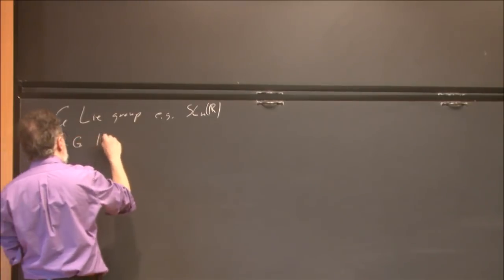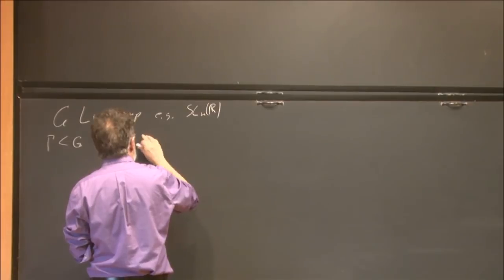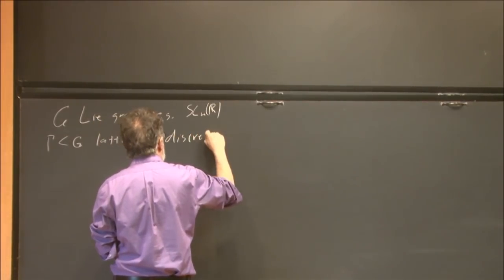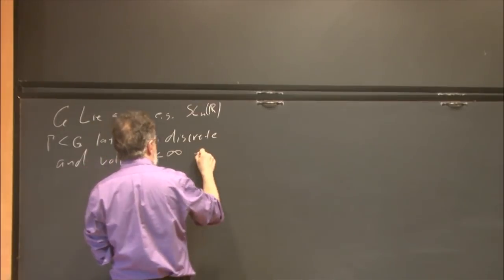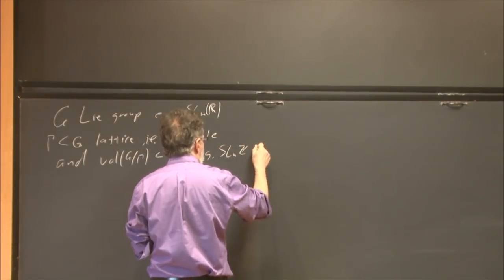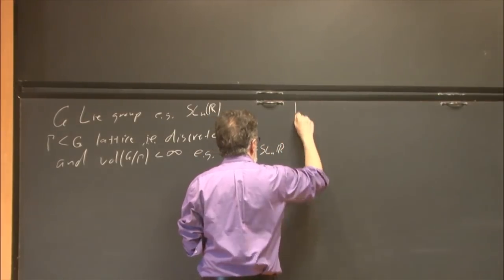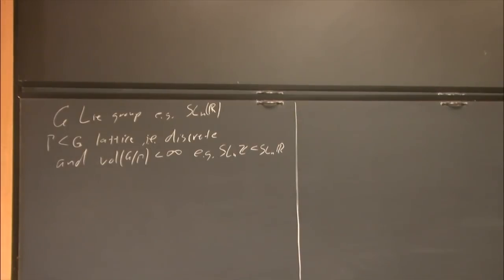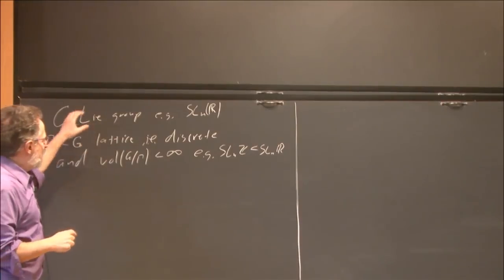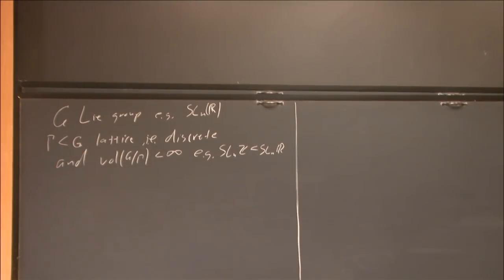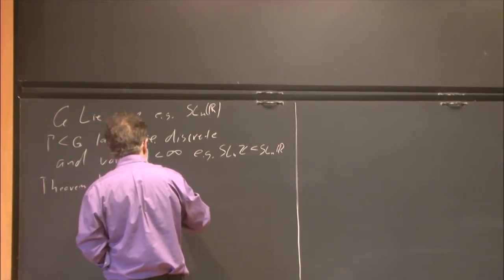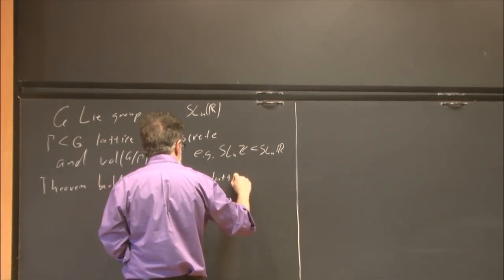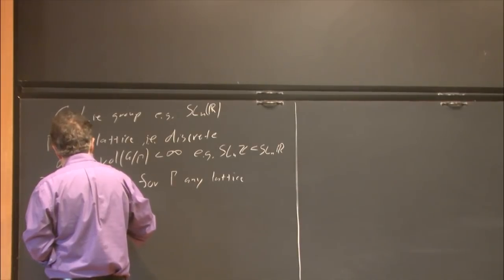Gamma in G is always going to be a lattice, by which I mean it's discrete and the Haar measure of G mod Gamma is finite. The example is Gamma = SL(N,Z) inside G = SL(N,R). To give you one idea of what we're really after: there are lots of lattices in these Lie groups. The theorem holds, more or less as stated, for Gamma any lattice in SL(N,R), not just for SL(N,Z).